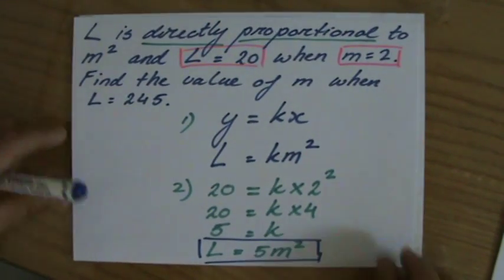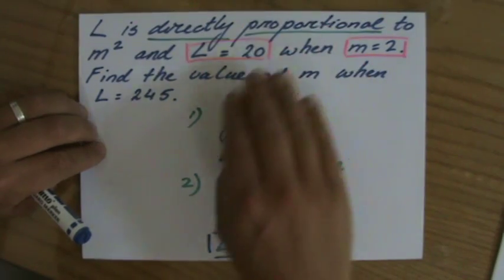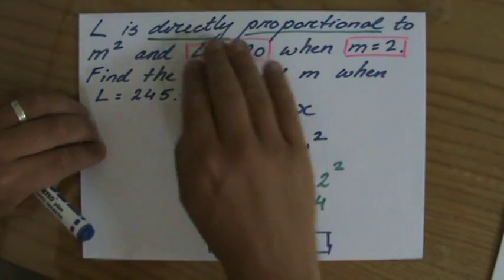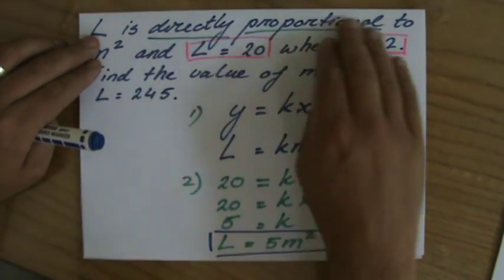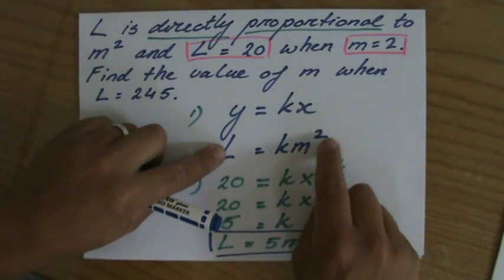So with direct proportion, if I just go through it again very quickly. Direct proportion: Y equals kx. But now they say L is directly proportional to m squared, so I write L equals km squared.